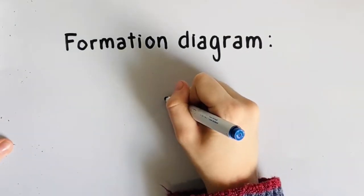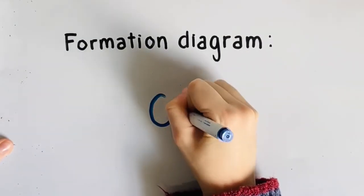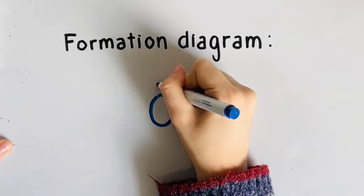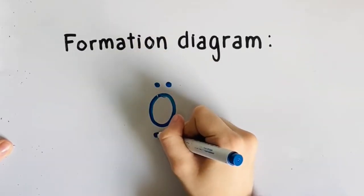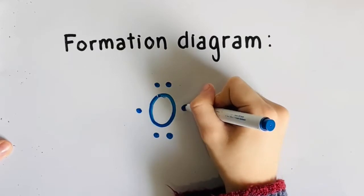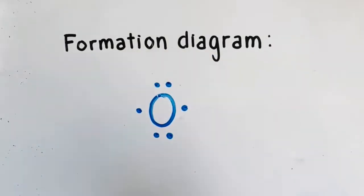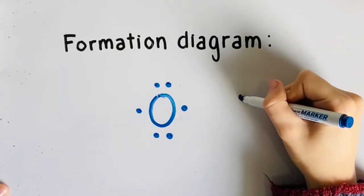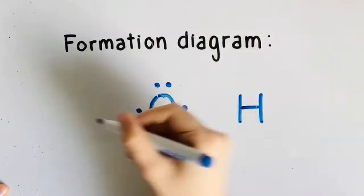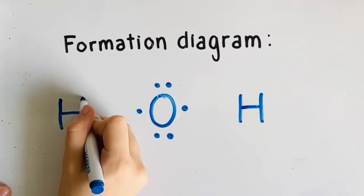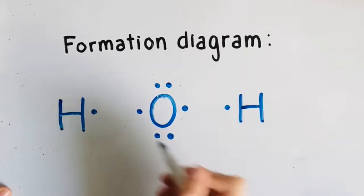In a formation diagram, we need to show the bond between the hydrogen atoms and the oxygen atom. First, we will draw oxygen with six dots around it representing its six valence electrons. On each side of the oxygen atom, we will draw a hydrogen atom because there are two hydrogen atoms with one dot to show that they have one valence electron.